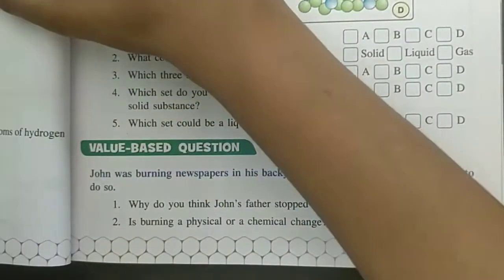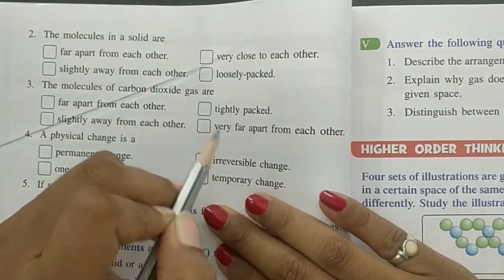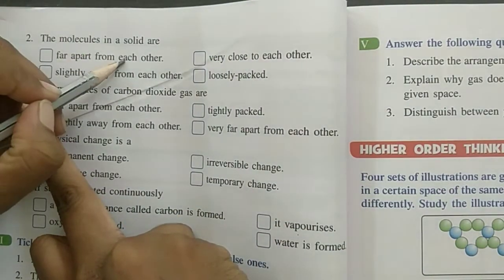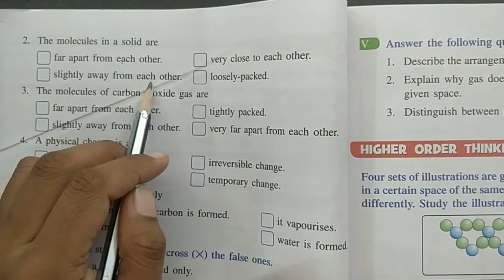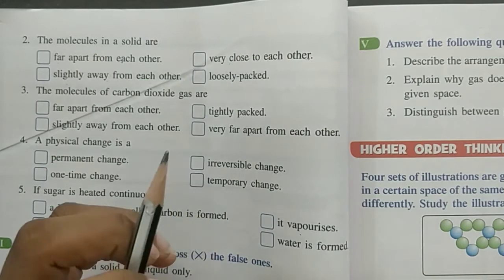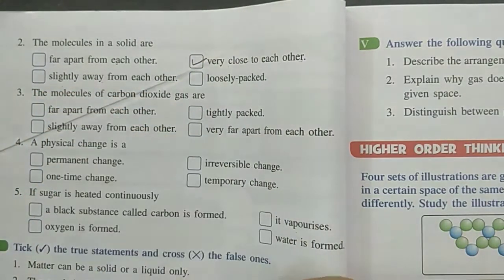And next is, the molecules in a solid are far apart from each other, very close to each other, slightly away from each other, loosely packed. How are they? Yes, very close to each other. So answer is very close to each other.